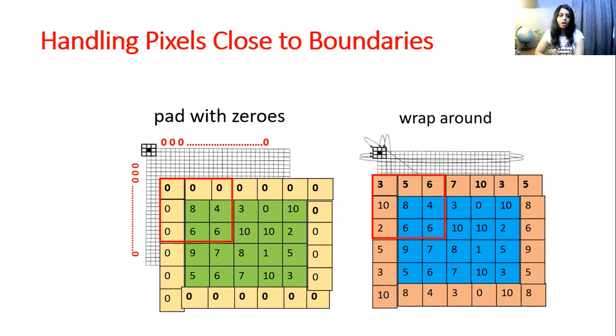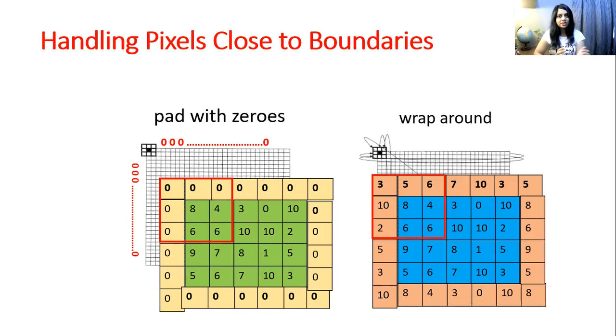If we pad the image with zeros or use wrap-around, the output image size will remain the same as the input image size.